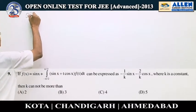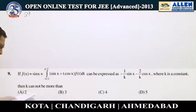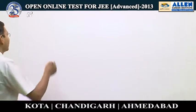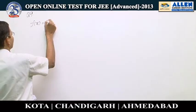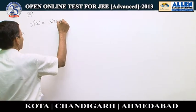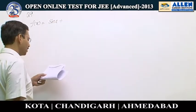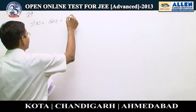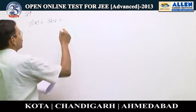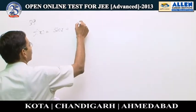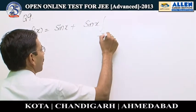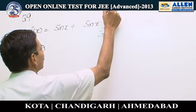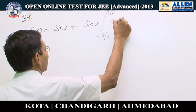Question number 9. Ethics is given as f(x) = sine x times the integral from -π/2 to π/2 of f(t) dt.